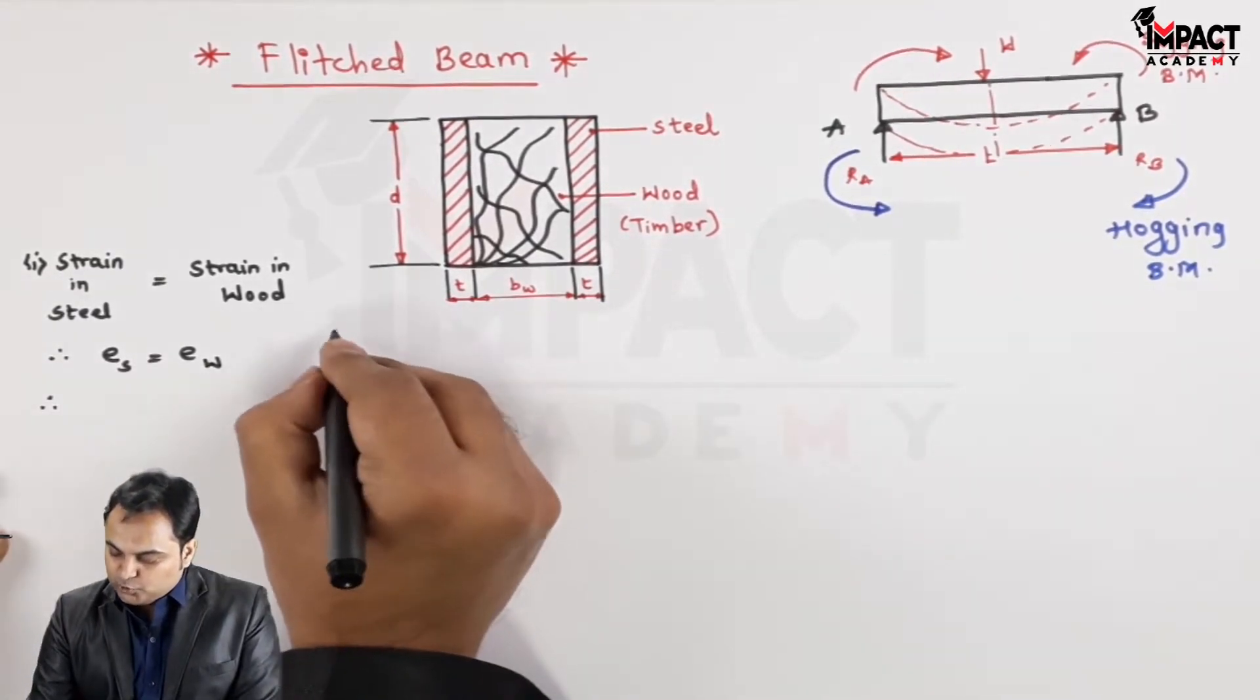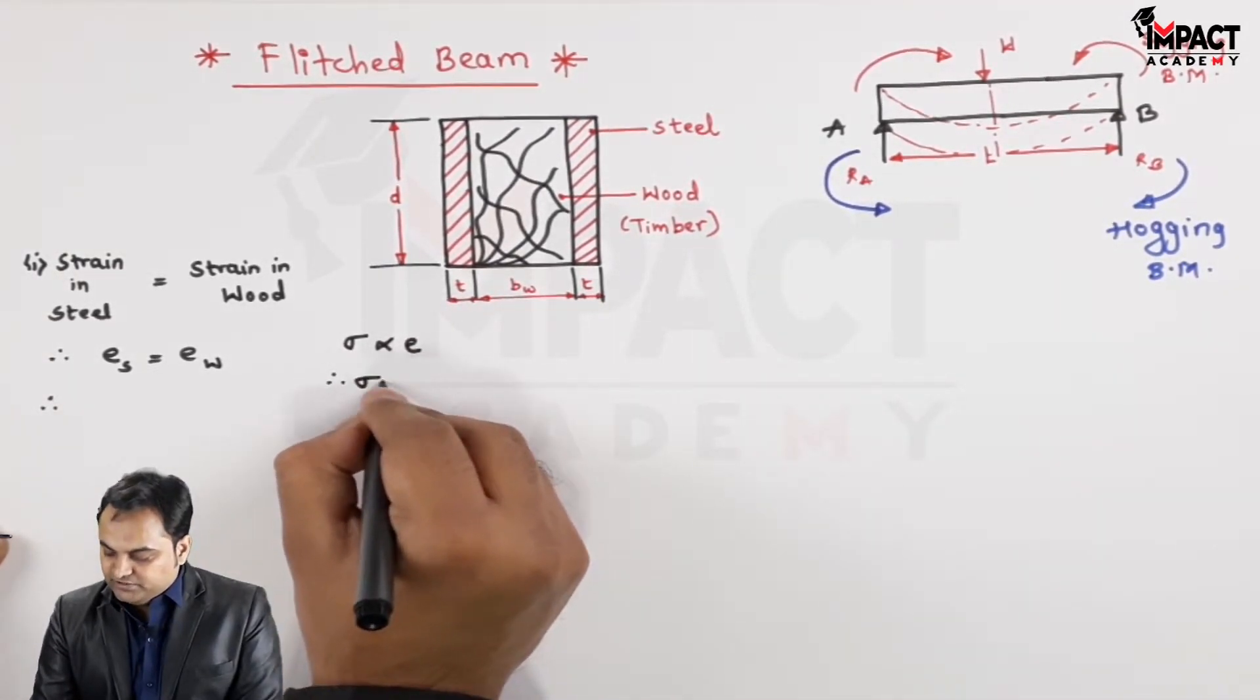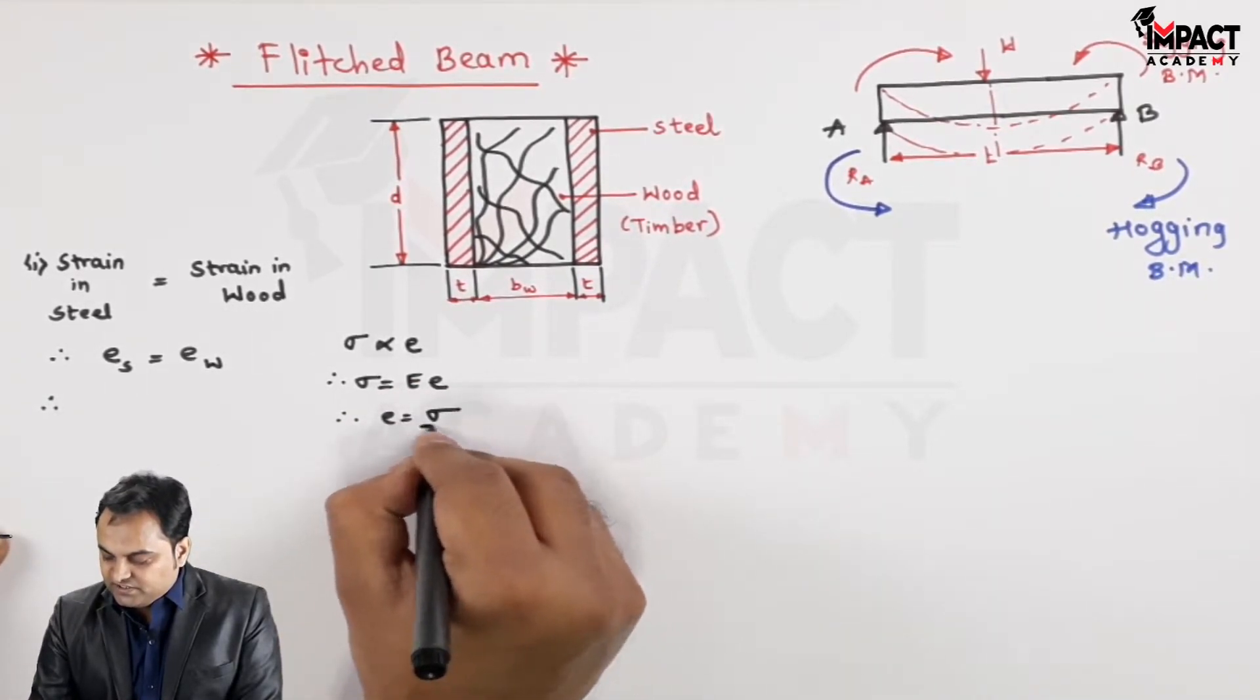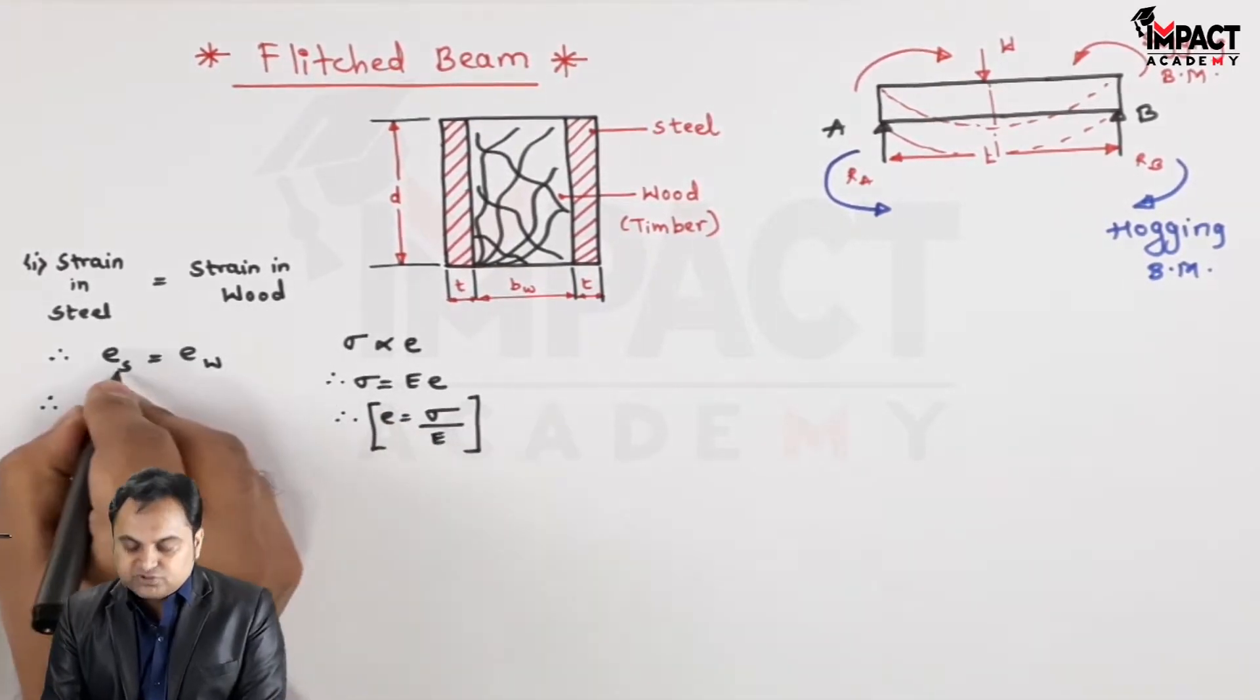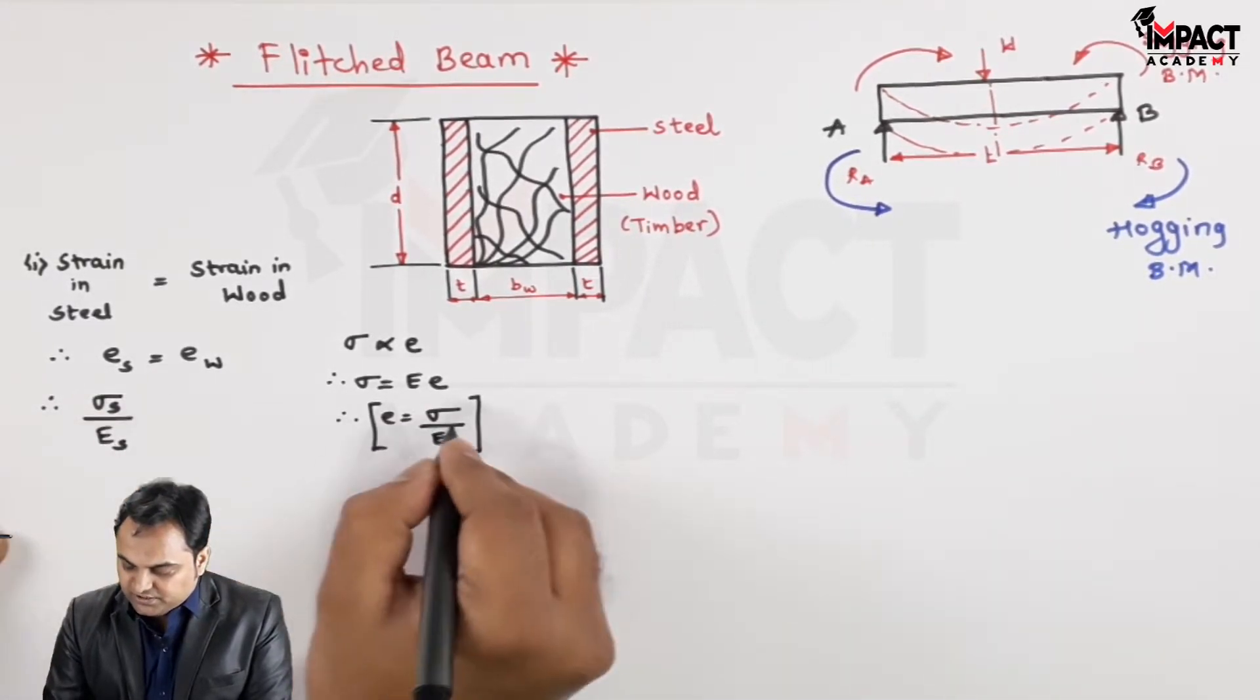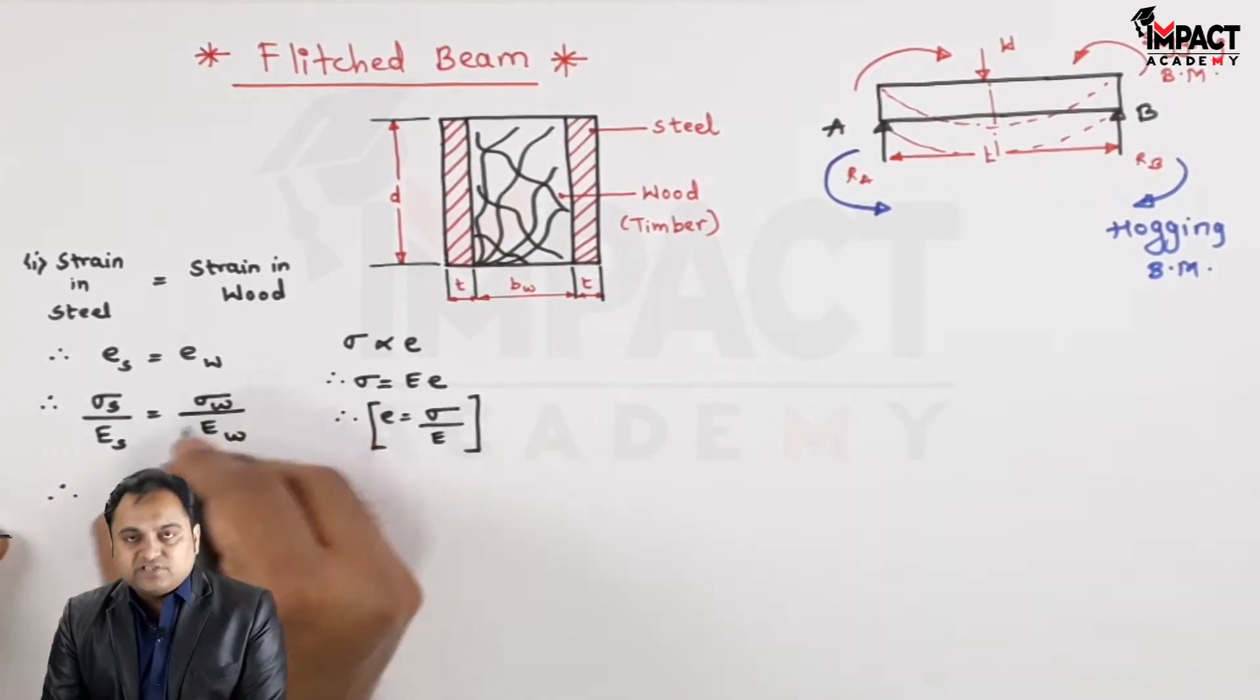Now as per Hooke's law, stress is directly proportional to strain. When I remove the proportionality sign I have a constant which is capital E called as Young's modulus. So strain is basically stress upon Young's modulus. So this strain would be replaced with stress in steel upon Young's modulus in steel and similarly for wood, stress in wood upon Young's modulus of wood.